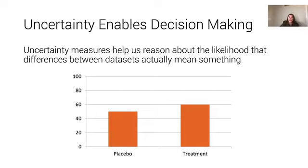So, part of why we care about uncertainty is uncertainty allows for more sophisticated decision-making through data. We can use uncertainty essentially to provide a proxy for the likelihood that differences between two data sets actually mean something.